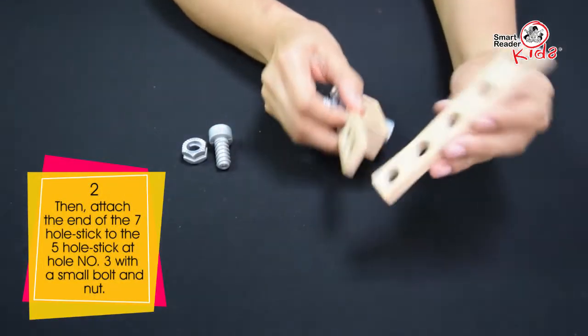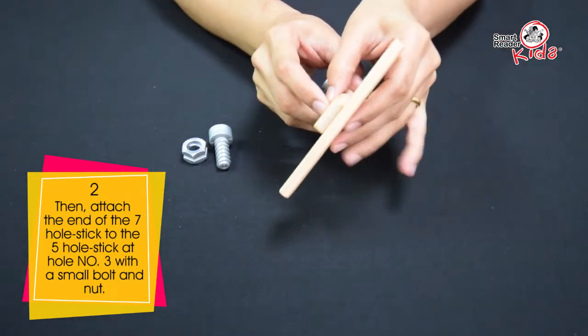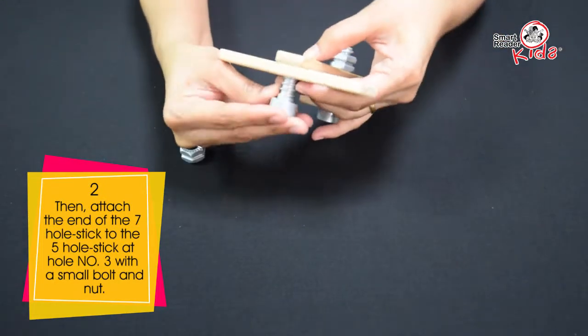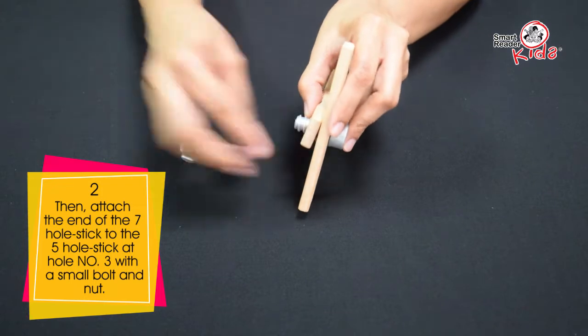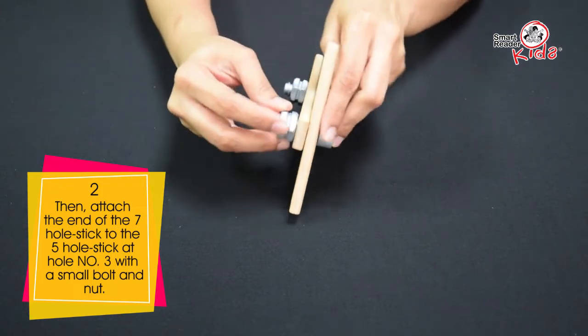Then, attach the end of the 7-hole stick to the 5-hole stick at hole number 3 with a small bolt and nut.